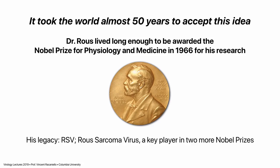The virus he discovered was called Rous sarcoma virus, and he got a Nobel Prize for showing that it caused cancers in chickens. Two other Nobel Prizes were subsequently awarded for work on the same virus — the discovery of reverse transcriptase in Rous sarcoma virus by Baltimore and Temin. We'll talk about the third Nobel in a moment.